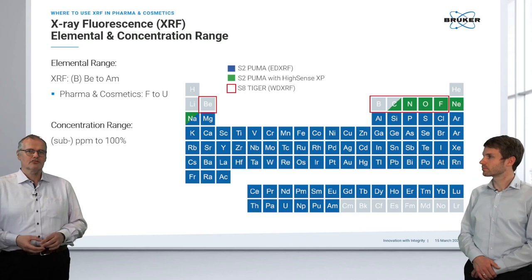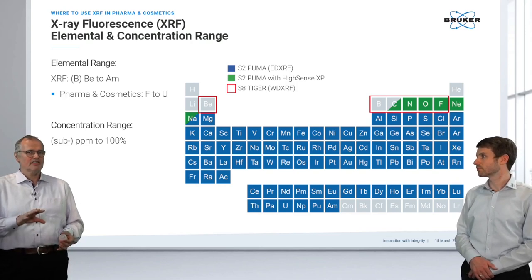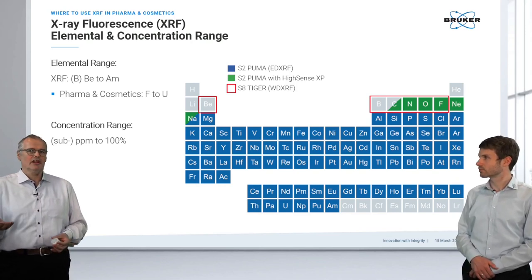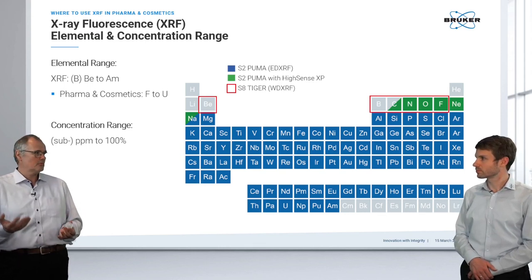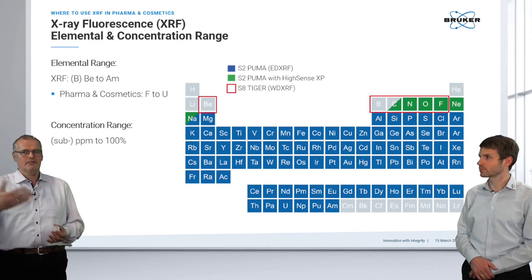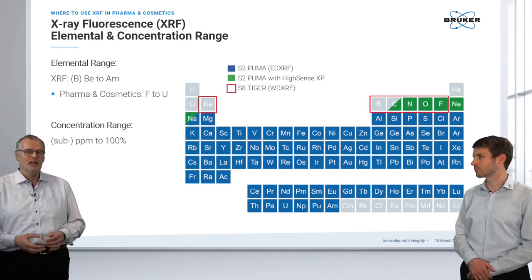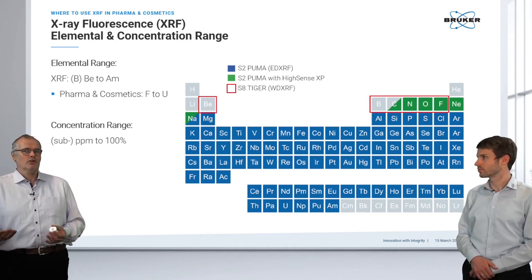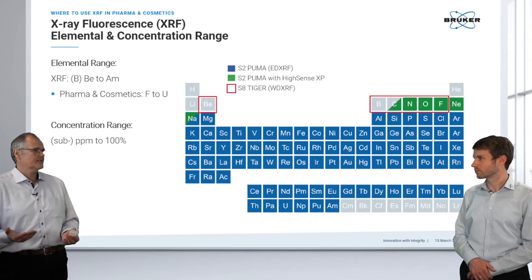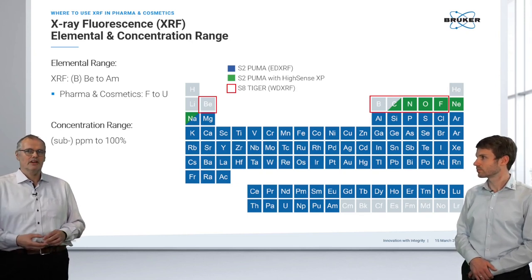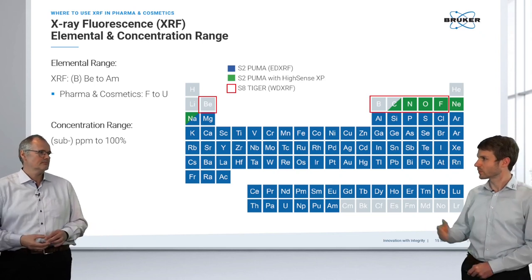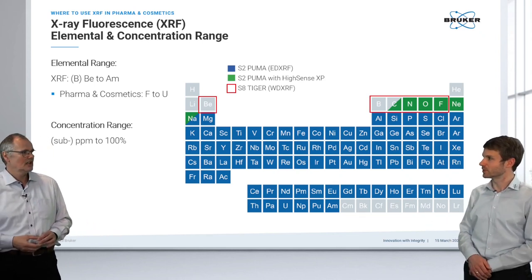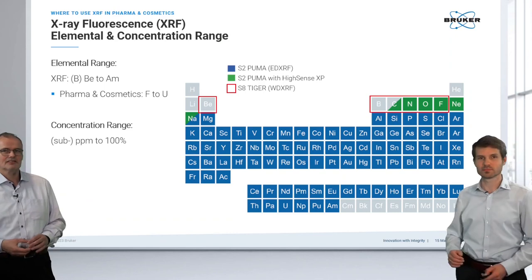The typical concentration range is from the sub-ppm level up to 100%. So it's very useful when analyzing raw materials that may consist of 50% titanium, while simultaneously detecting traces of titanium in other products — a very large calibration range. And this can all be done on the same sample.